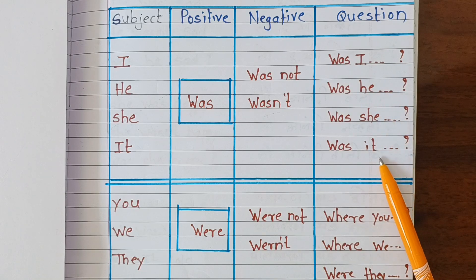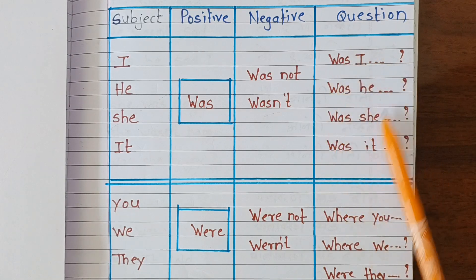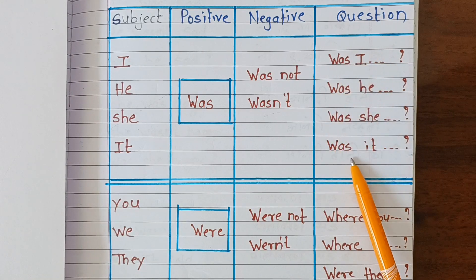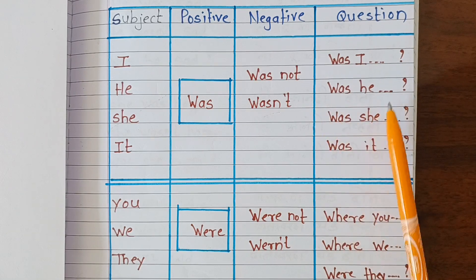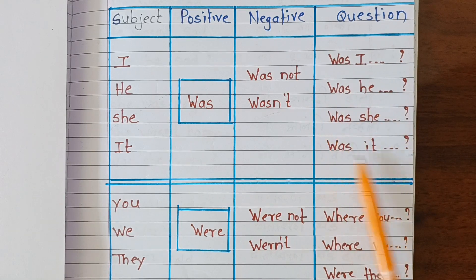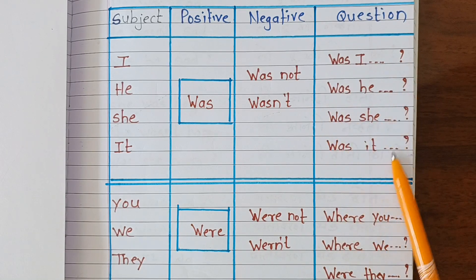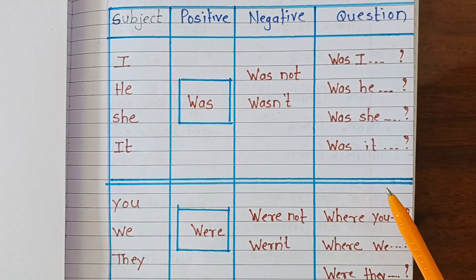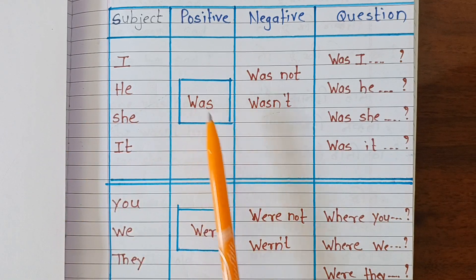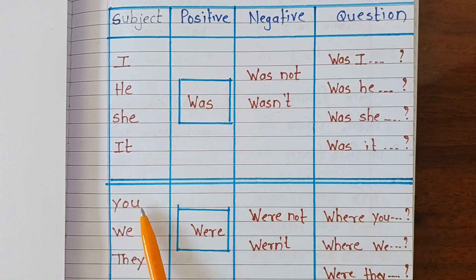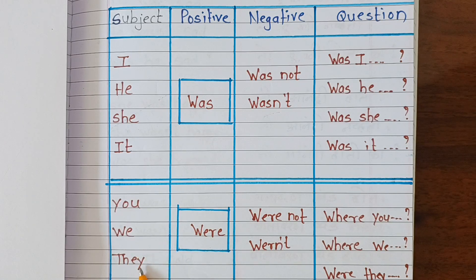I, he, she, and it use the pattern of 'was'. Was I, was he, was she, was it. If we use the word I, he, she, it — then we use 'was'. Then we use the word you, we and they.